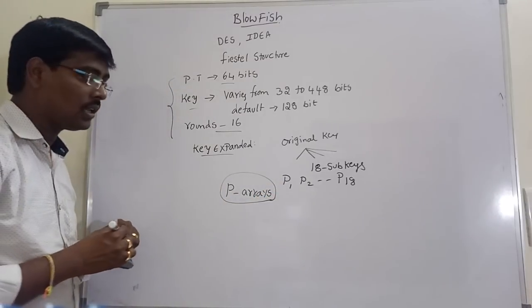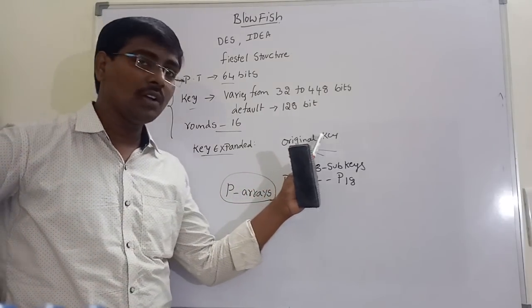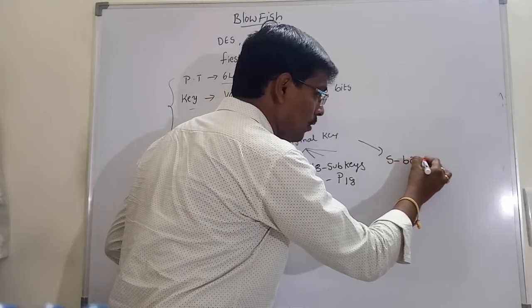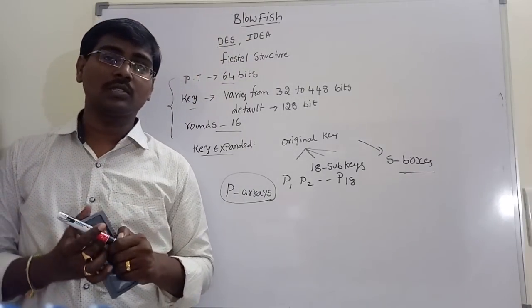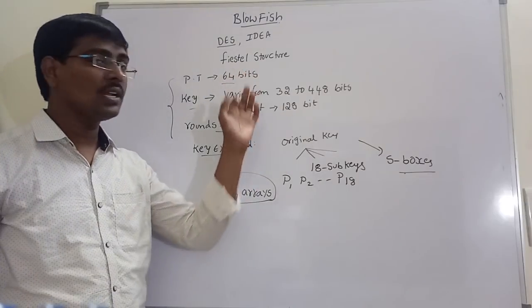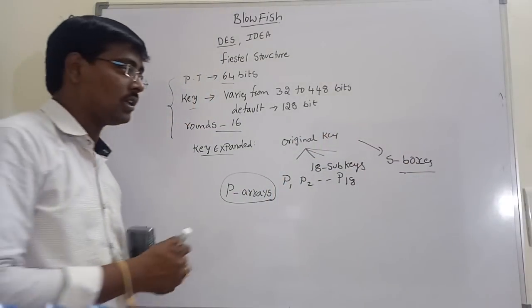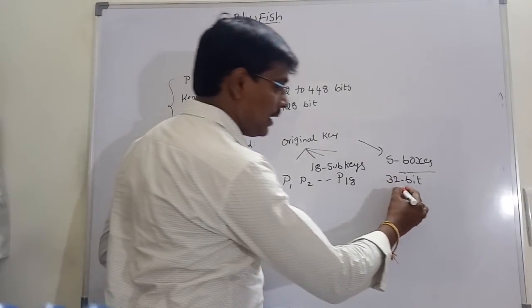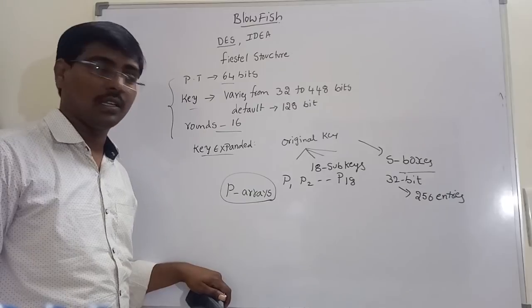All subkeys are called P-arrays — that is, P1, P2, through P18 are called P-arrays. Along with the division of keys into subkeys, our key is also used to derive S-boxes. Unlike DES, where S-boxes do not depend on the key, in Blowfish we derive 32-bit S-boxes from the original key, and each S-box contains approximately 256 entries.